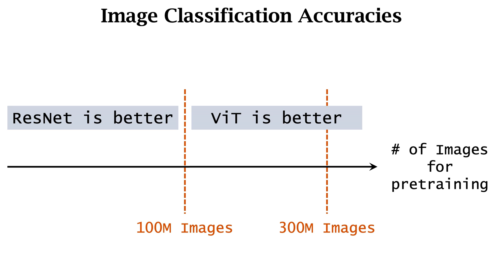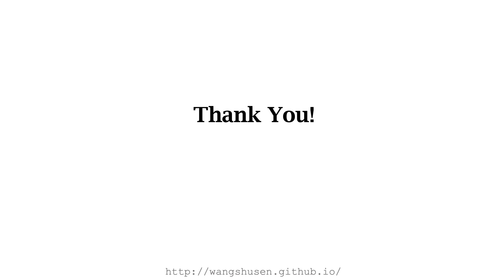In sum, Vision Transformer requires huge data for pre-training. Transformer is advantageous over CNNs only if the dataset for pre-training is sufficiently large. Transformer has an insatiable appetite for data. 300 million images are not enough. Thank you for watching this lecture. The link to my slides can be found below the video.